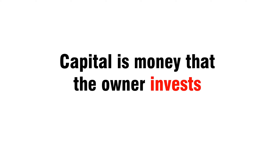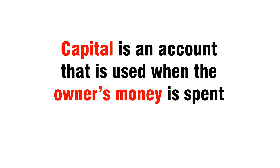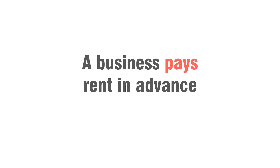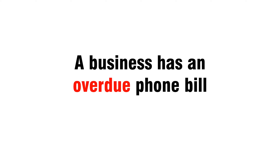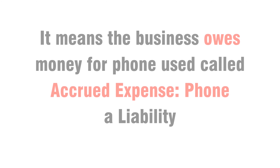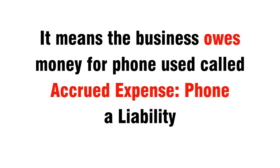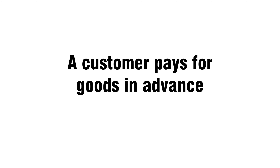Capital is an account that is used when the owner's money is spent. A business pays rent in advance — it means the business owns space in advance, called prepaid expense rent, an asset. A business has an overdue phone bill — it means the business owes money for phone used, called accrued expense phone, a liability.